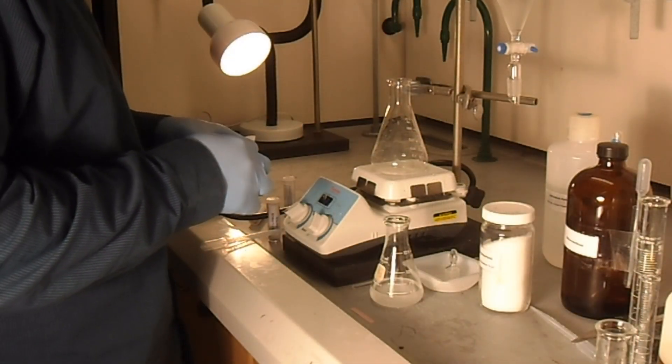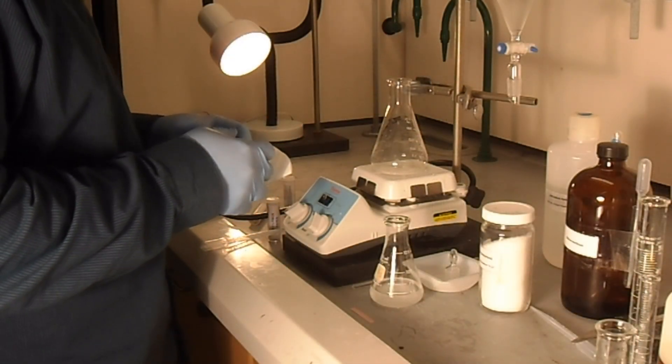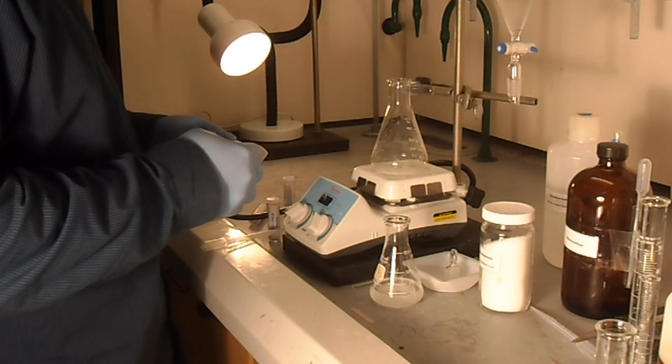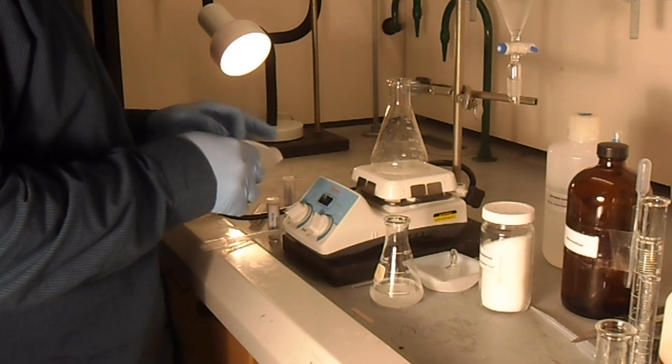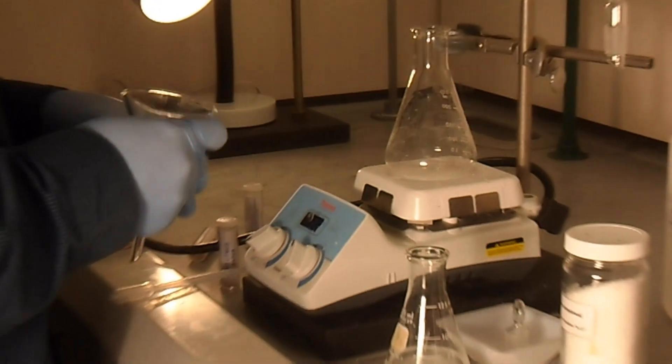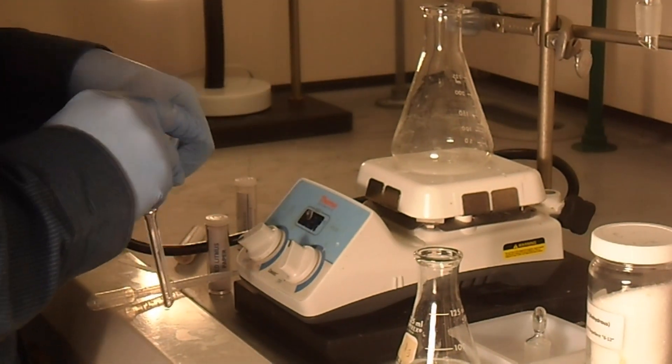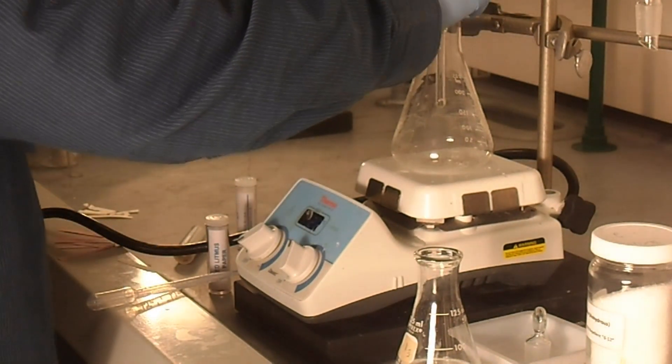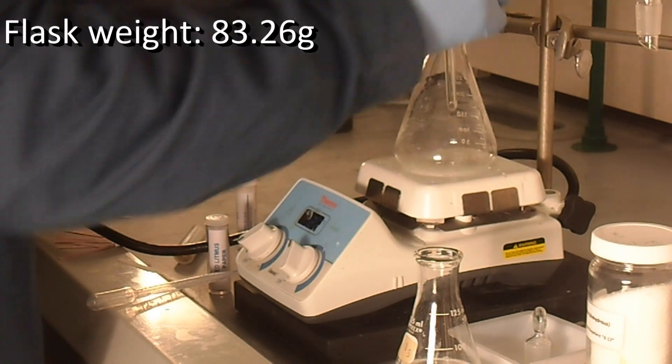So, now that we have our solution dried, we're going to do a gravity filtration to remove the drying agent. We want to make sure that the Erlenmeyer flask that you're going to be filtering into has a weight, and the weight of that flask is 83.26 grams.